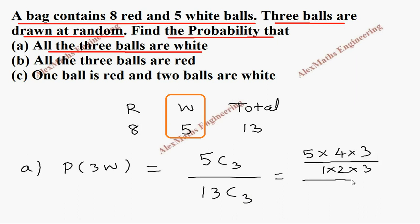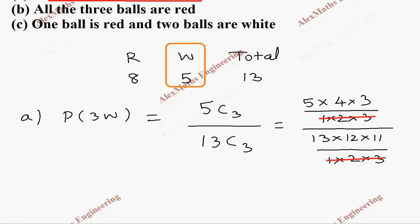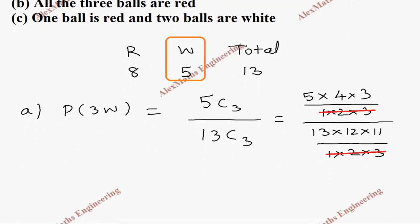The calculation is 5C3 which is 5 into 4 into 3 divided by 1 into 2 into 3, and 13C3 is 13 into 12 into 11 divided by 1 into 2 into 3. We cancel the common denominators 1 into 2 into 3. Apart from that, 4 threes are 12, so from the remaining the numerator is 5 and the denominator is 143.